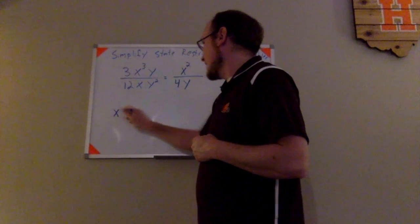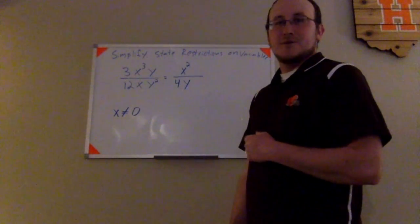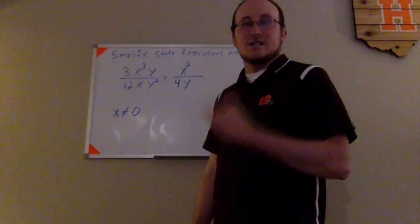So for my restrictions, x cannot equal 0. And since this problem also had another variable in it, it had y, which is also occurring in its denominator.